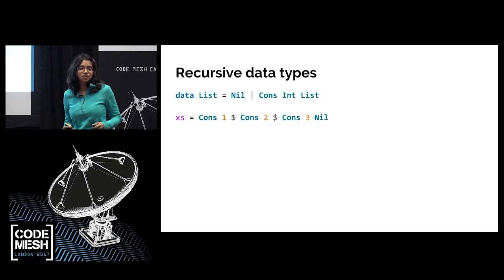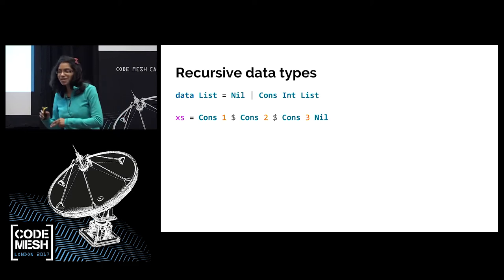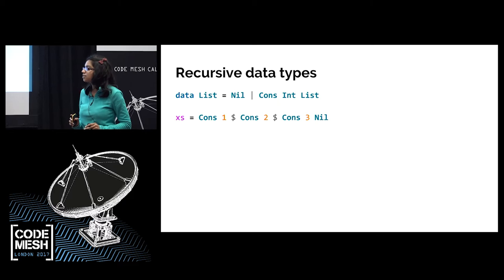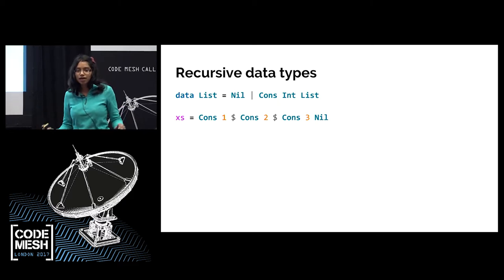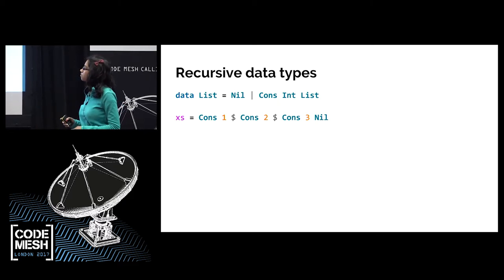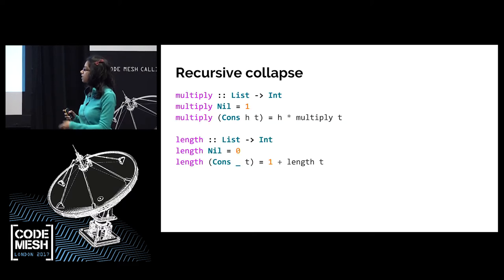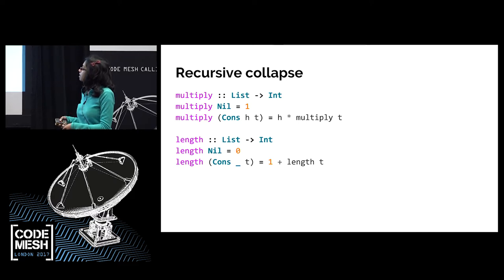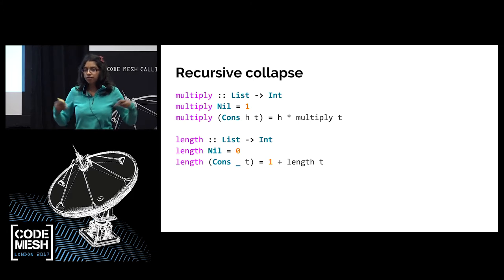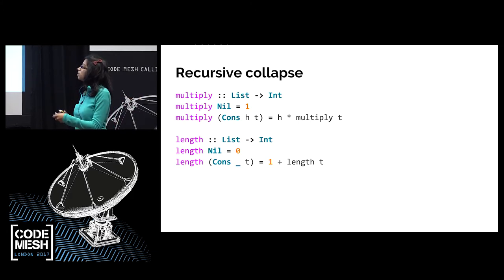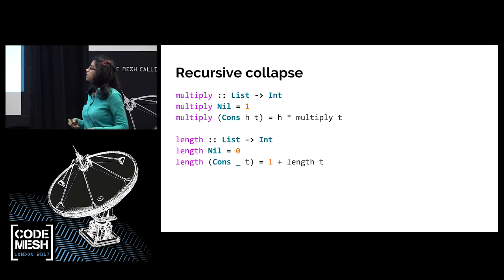I don't have a solution in this talk. What I want you to imagine is that all the data structures we're dealing with are terminating structures. A basic example of a list of three numbers. The cool thing about a structure that terminates is that I can write a function to collapse it. I've got two functions here: one, multiply, which multiplies all the elements in our list, and one, length, which calculates the length.